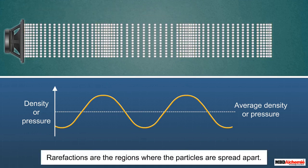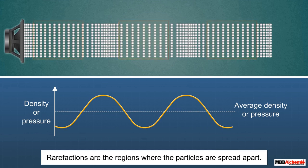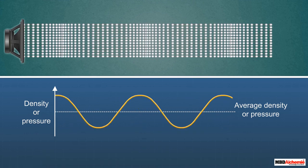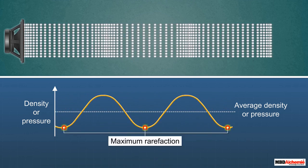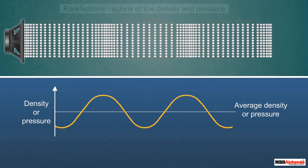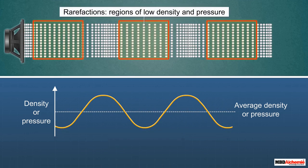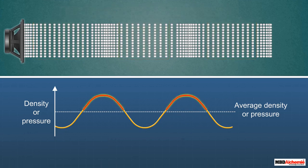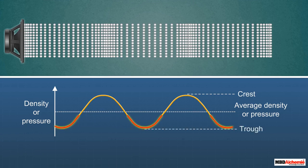Rarefactions are regions where particles are spread apart, represented by the valley — the lower portion of the curve. The extreme bottom point represents the region of maximum rarefaction, where density and pressure are low. A peak of the curve representing compressions is known as a crest, and the valley representing rarefactions is known as a trough of the wave.